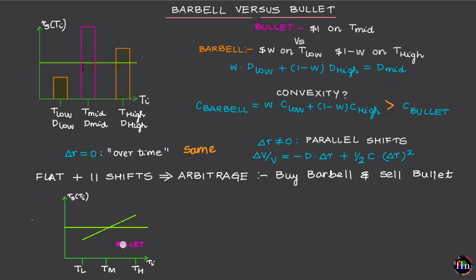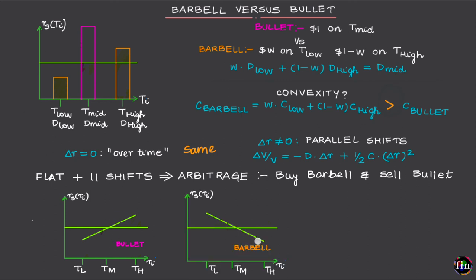Comparing bullet and barbell under a steepening: the bullet wins over the barbell. Now if we allow for a flattening — where the bullet's yield stays unchanged, the short-term bond's yield rises, and the long-term bond's yield falls by the same amount — the short-term bond experiences a loss and the long-term bond experiences a gain. Because the long-term bond's duration is greater, its gain far exceeds the loss, and the barbell experiences a net overall gain. Therefore, under a flattening, the barbell wins over the bullet.